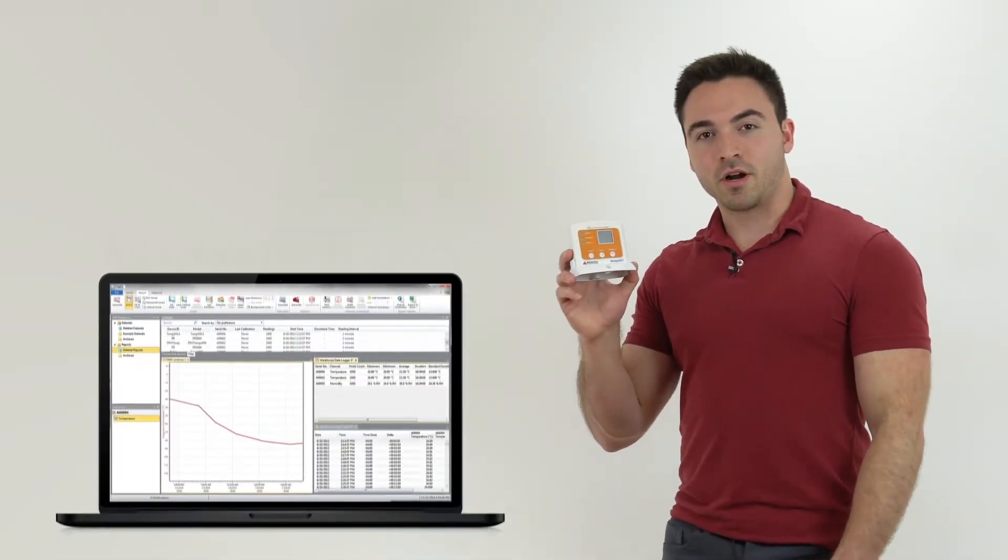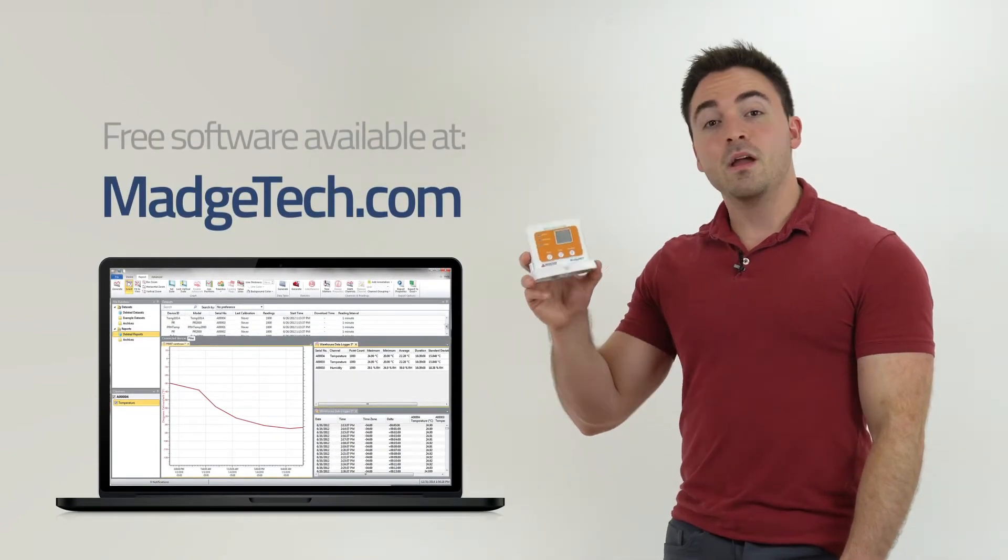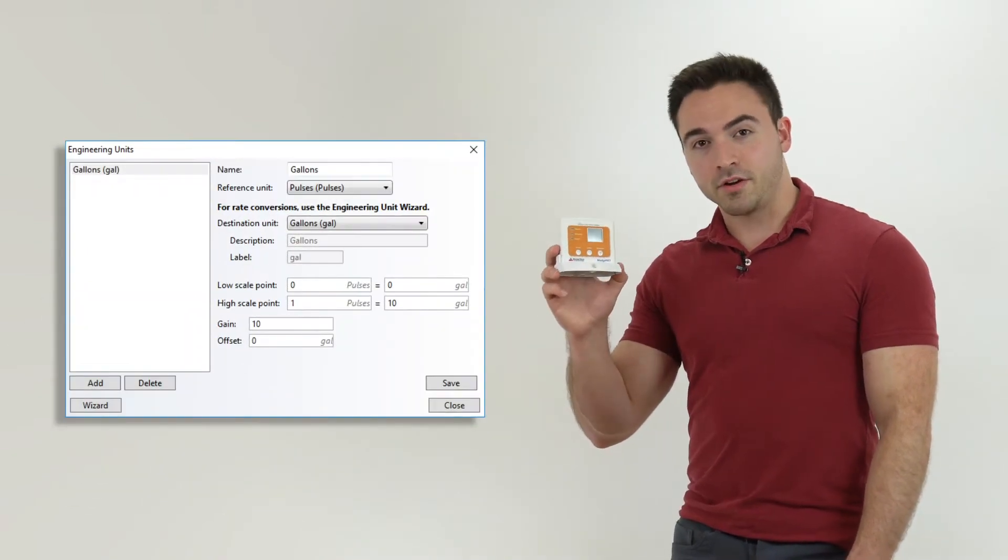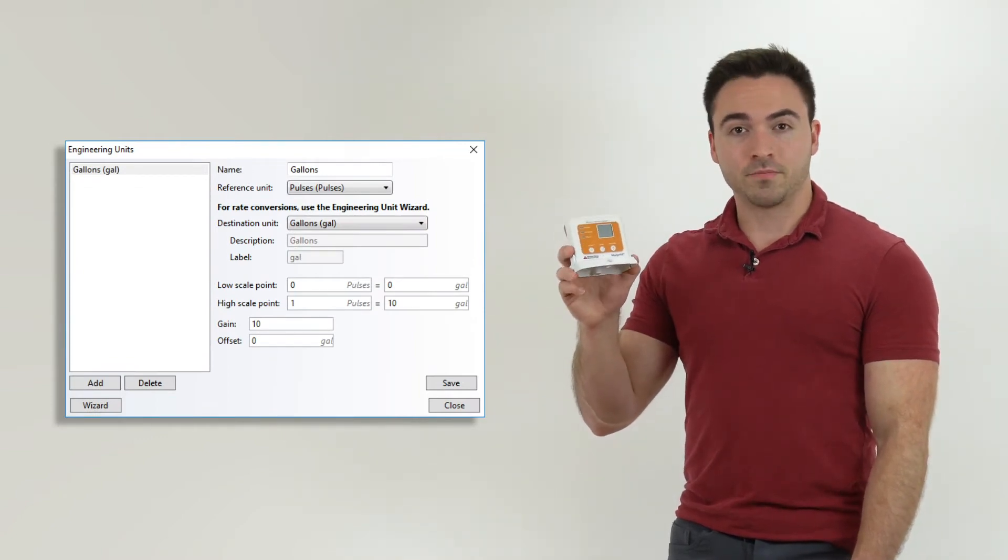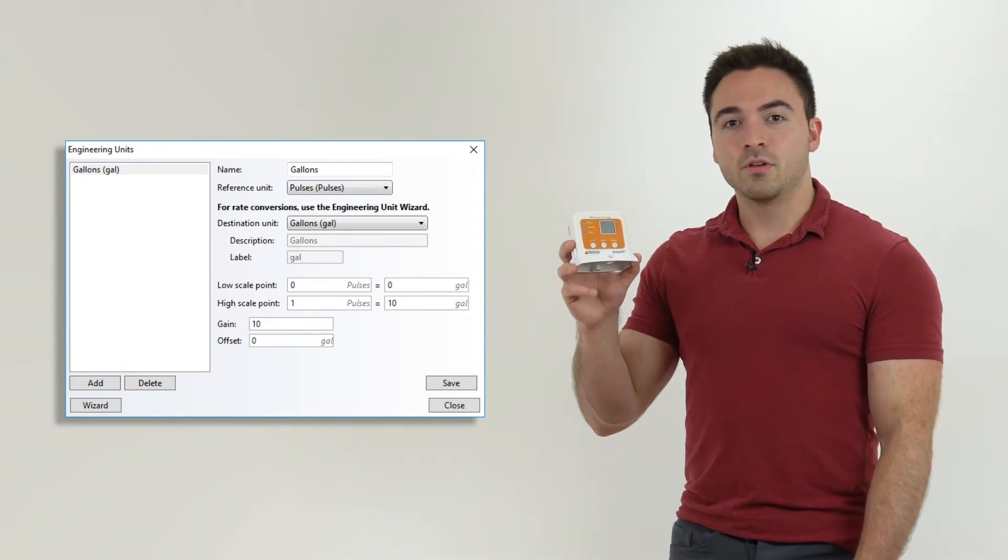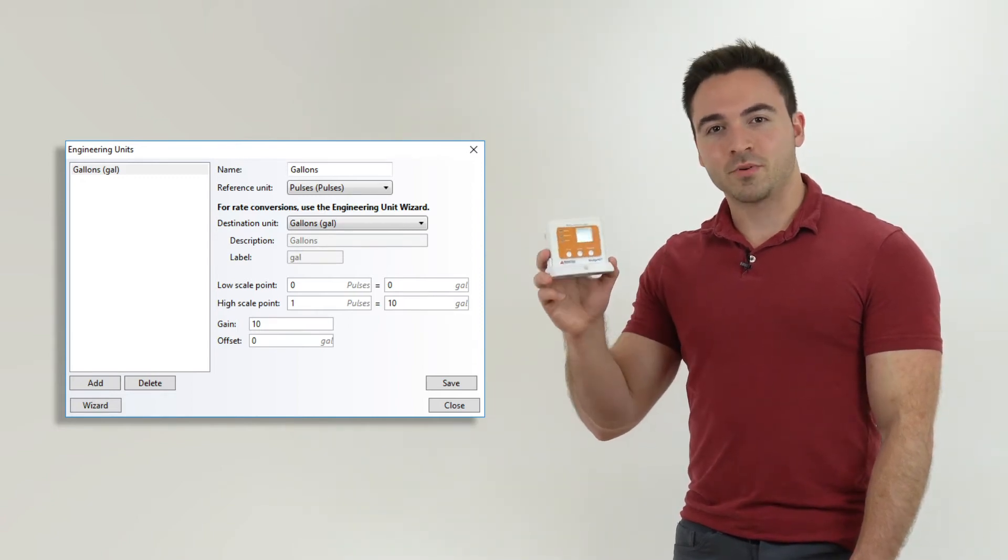Through the MadgeTech software, which can be downloaded for free from MadgeTech.com, the device can be programmed with engineering units, which can convert the recorded data into a different unit of measure, such as flow rate measured in gallons per minute or wind speed measured in miles per hour.